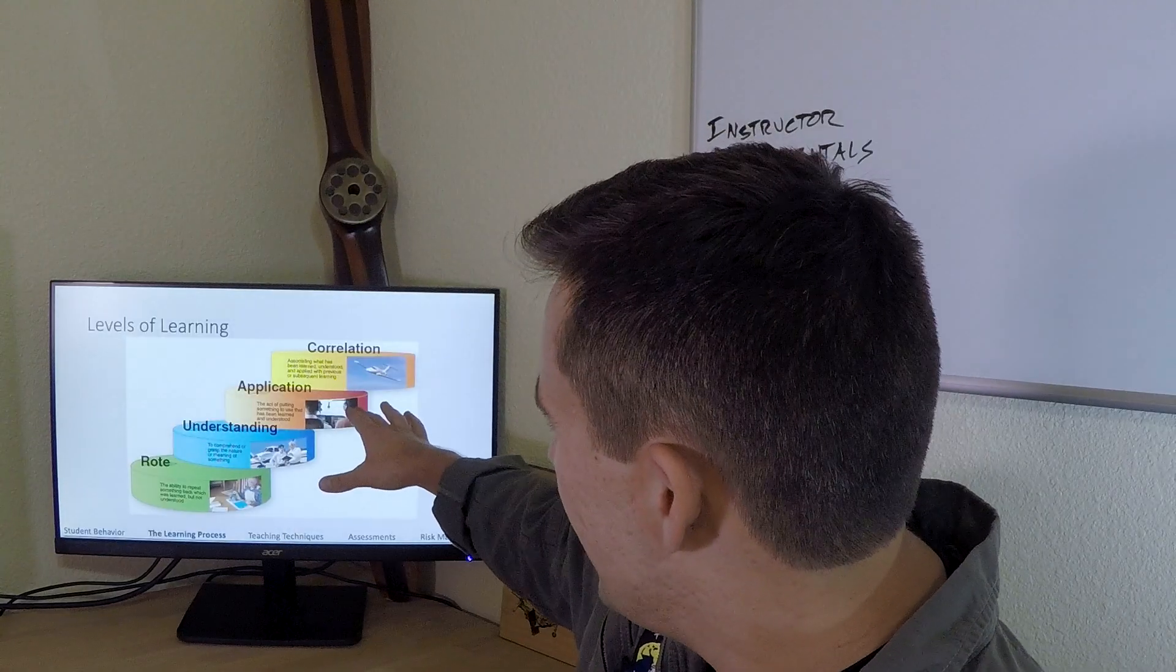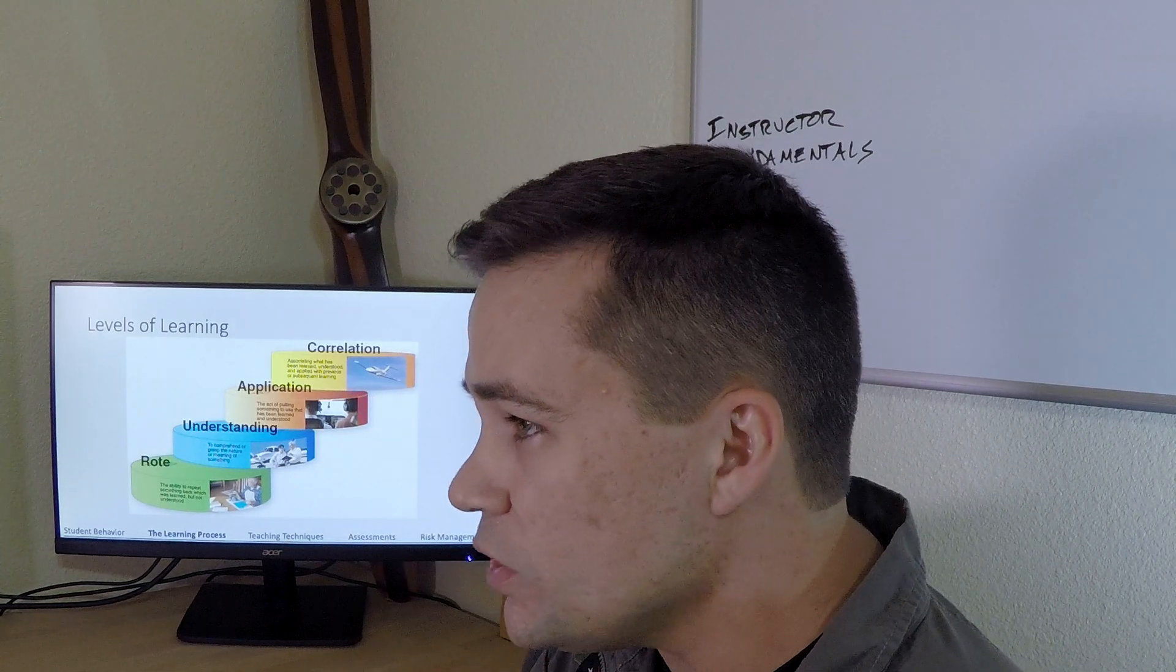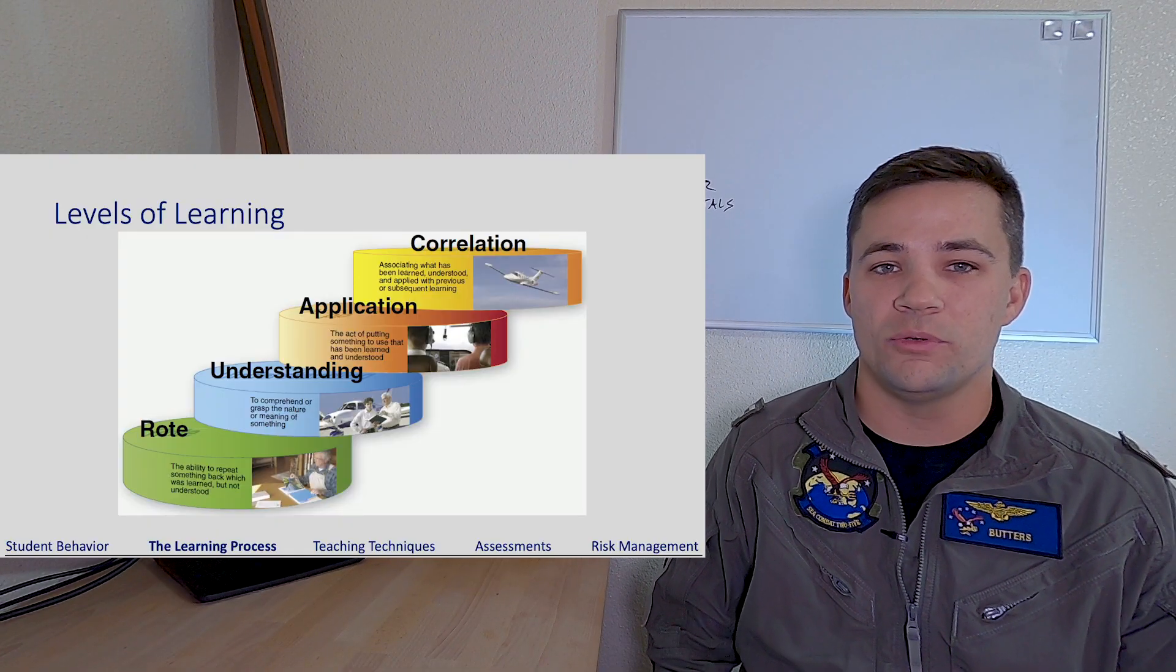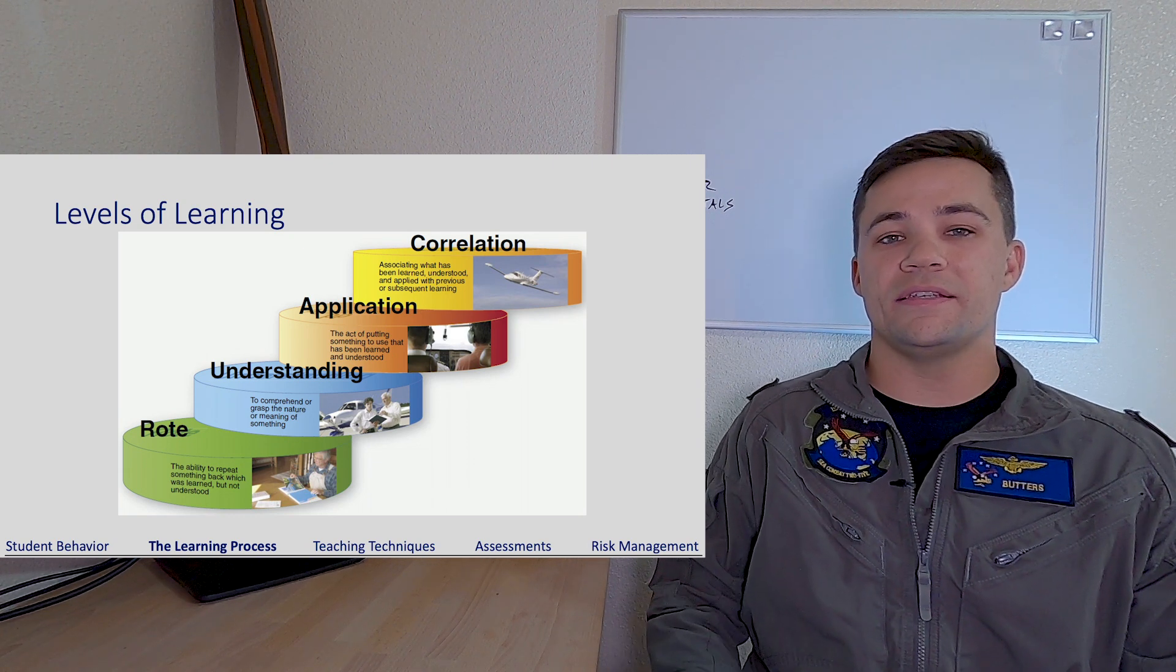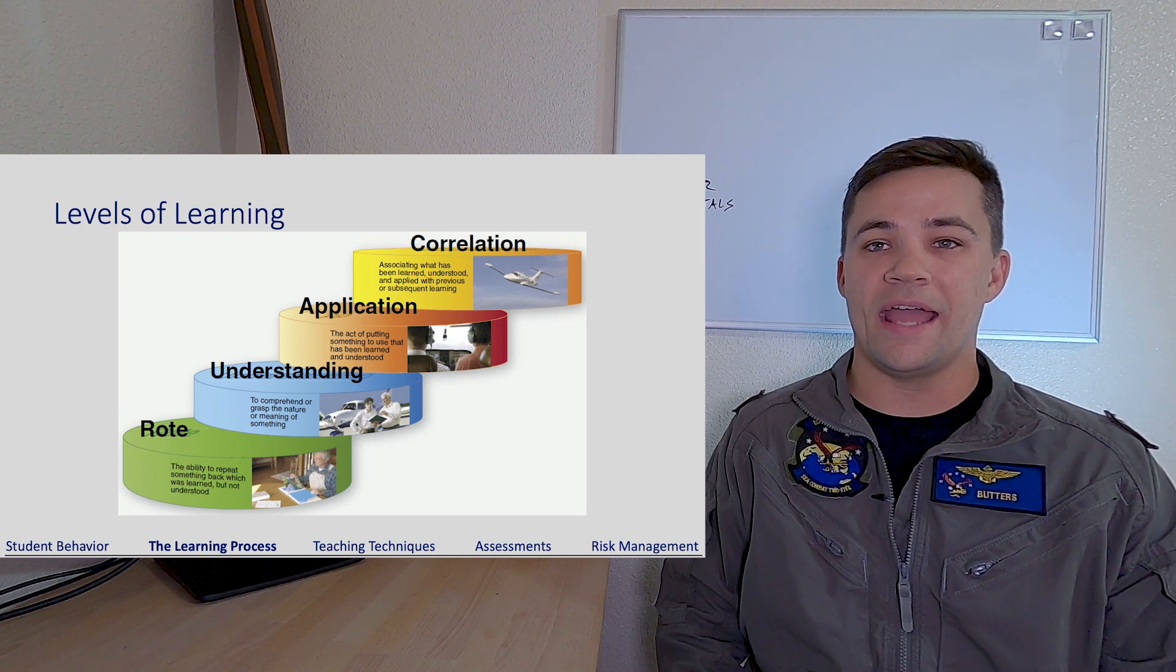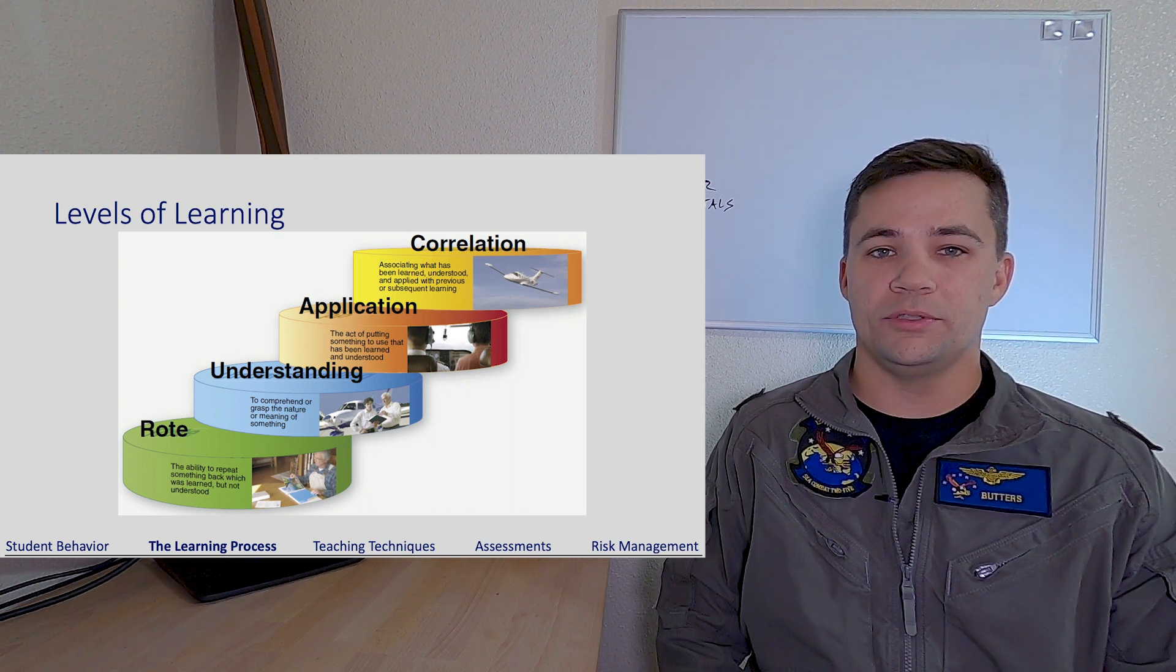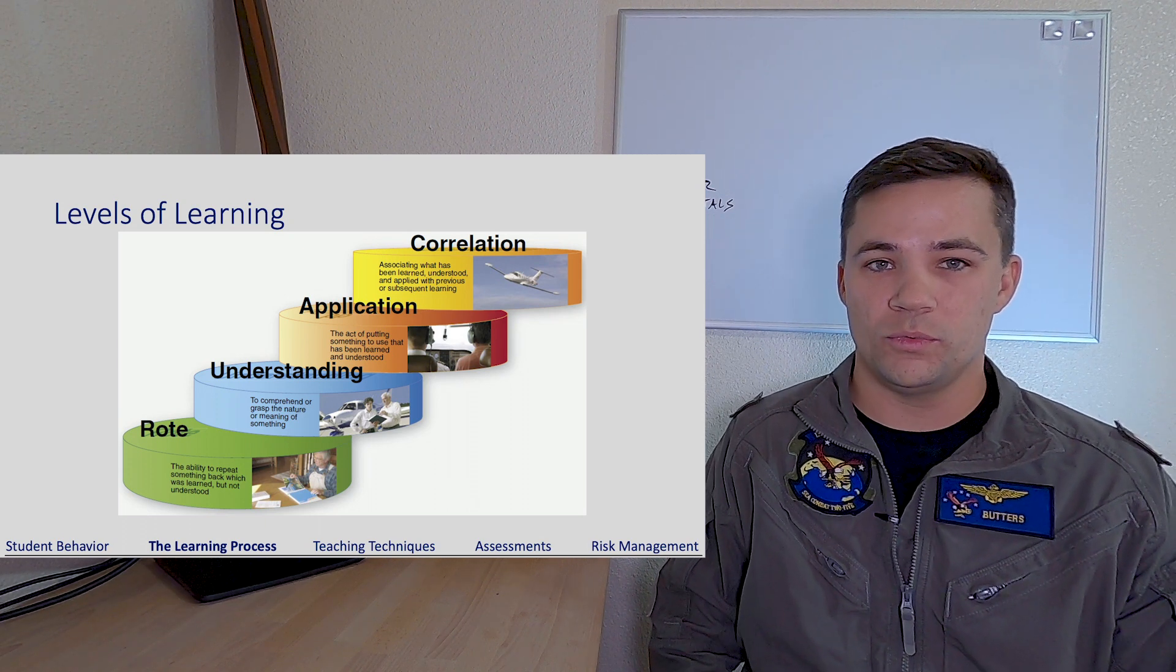Application then, this is that next level up from understanding, where we're taking our understanding and we're putting it to use. We've now understood the how, the why. This is that level where a student is able to see a situation, maybe something that they haven't encountered before, but because they have that understanding and now because they have that application level of learning, they're able to create a solution to a problem that they maybe haven't been presented before.